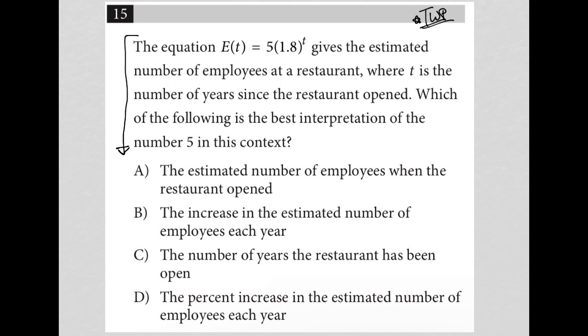So the first sentence here says the equation E(t) = 5(1.8)^t. I'm just underlining that. Gives the estimated number of employees at a restaurant where t is the number of years since the restaurant opened. Okay, makes sense.